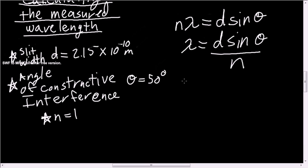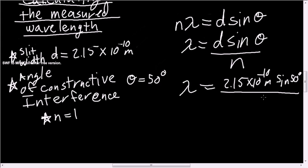I then just plug in my numbers. D is 2.15 times 10 to the minus 10 meters, times the sine of 50 degrees, all divided by n equals 1, because we are using the first line of constructive interference. And I find that the wavelength of my electron is 1.67 times 10 to the minus 10 meters.